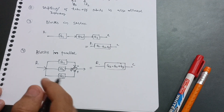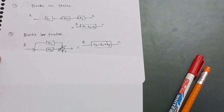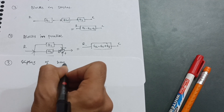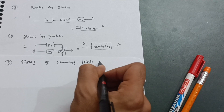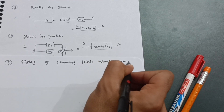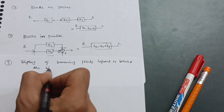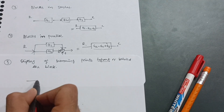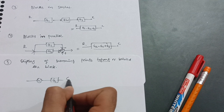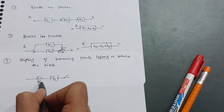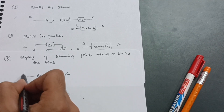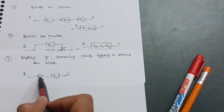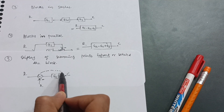Those were the first four rules. The fifth rule is the shifting of summing points in front or behind the block. Let's understand with an example. Shifting summing points in front: suppose this is your summing point, this is block G1, this is your output, and we take negative feedback X. We will take the 'in front' case first — move the summing point in front of block G1.